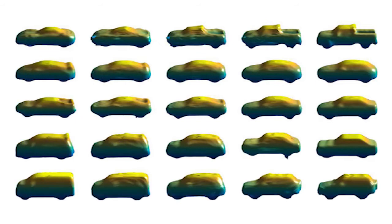It can also do what we call hallucination. For instance, if you show it a car image in 2D and then a truck image in 2D, and then you ask it to come up with something in between a car and a truck, it can come up with something between a car and a truck in 3D.